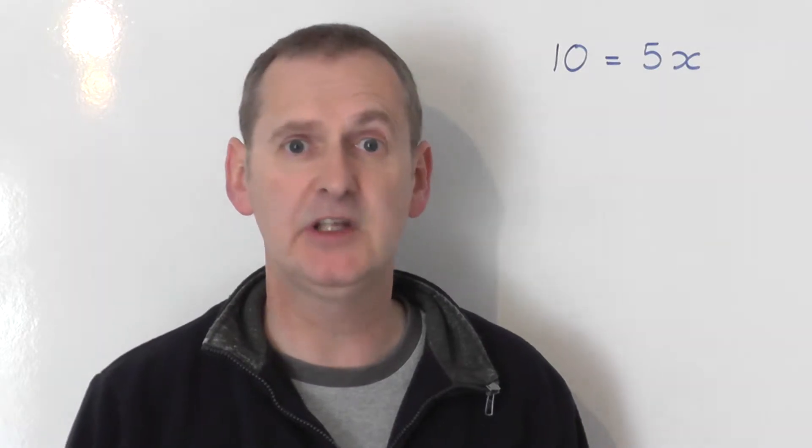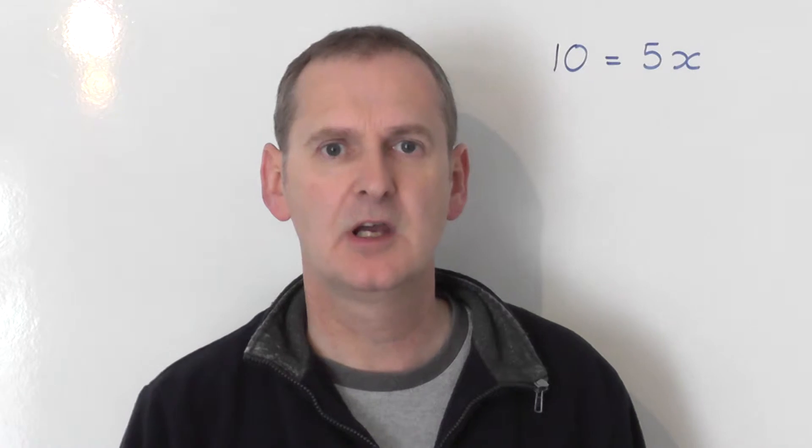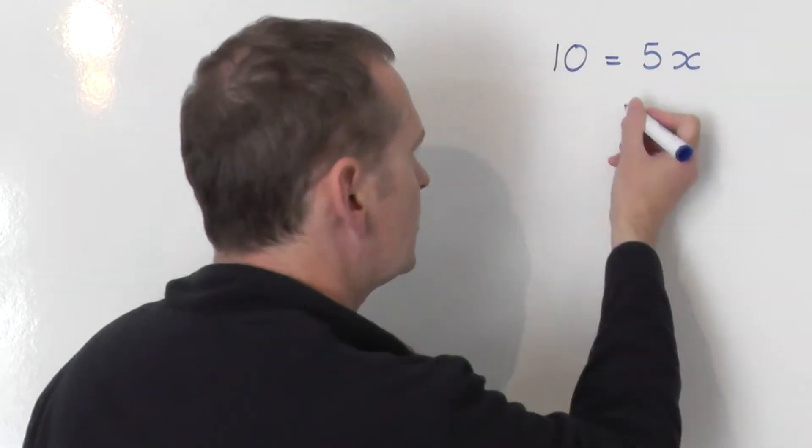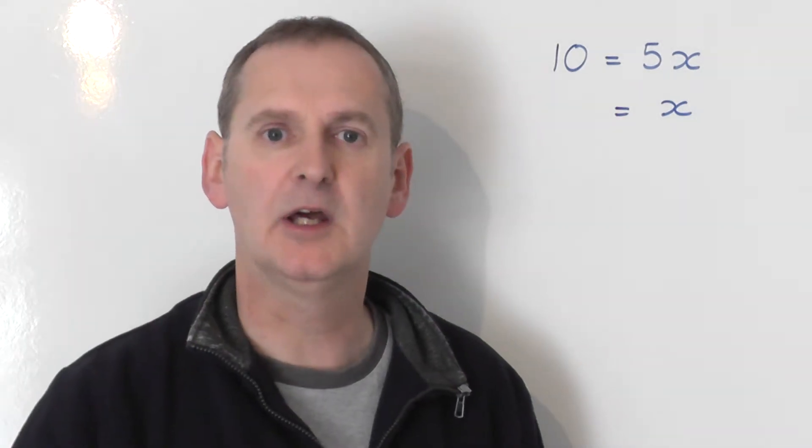So what I intend to do is leave the x on the right-hand side. But I don't want 5x, I want just x. So, I need to change that 5x into x. How can I do that?